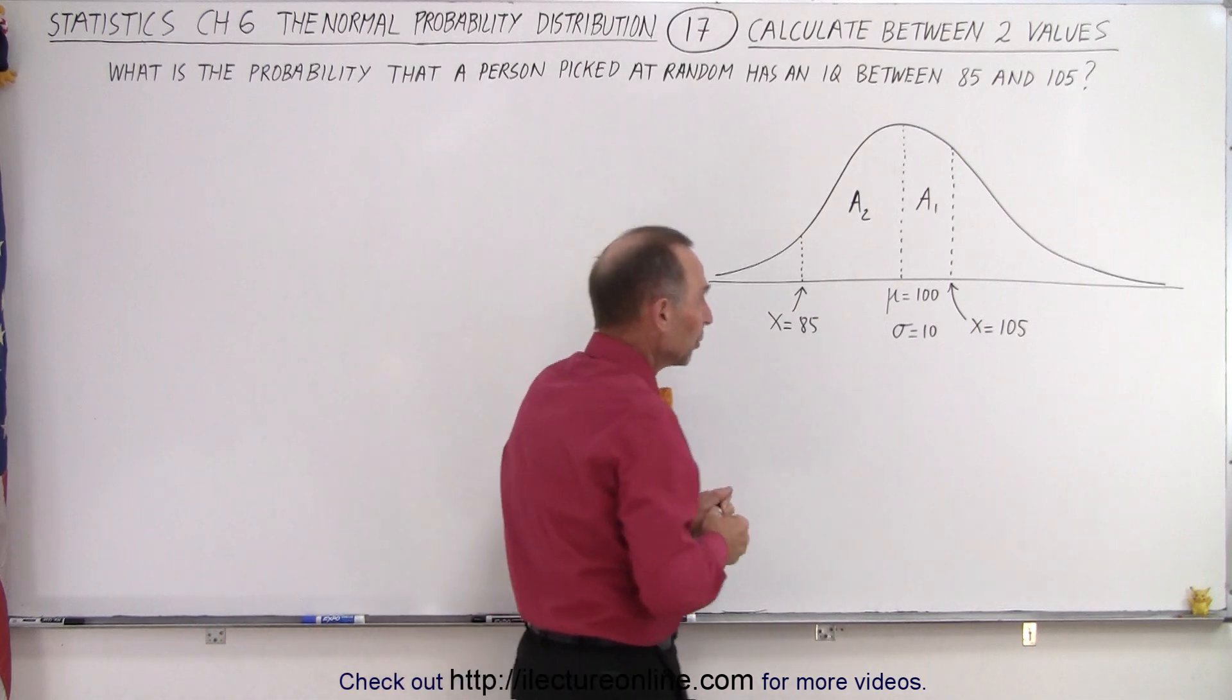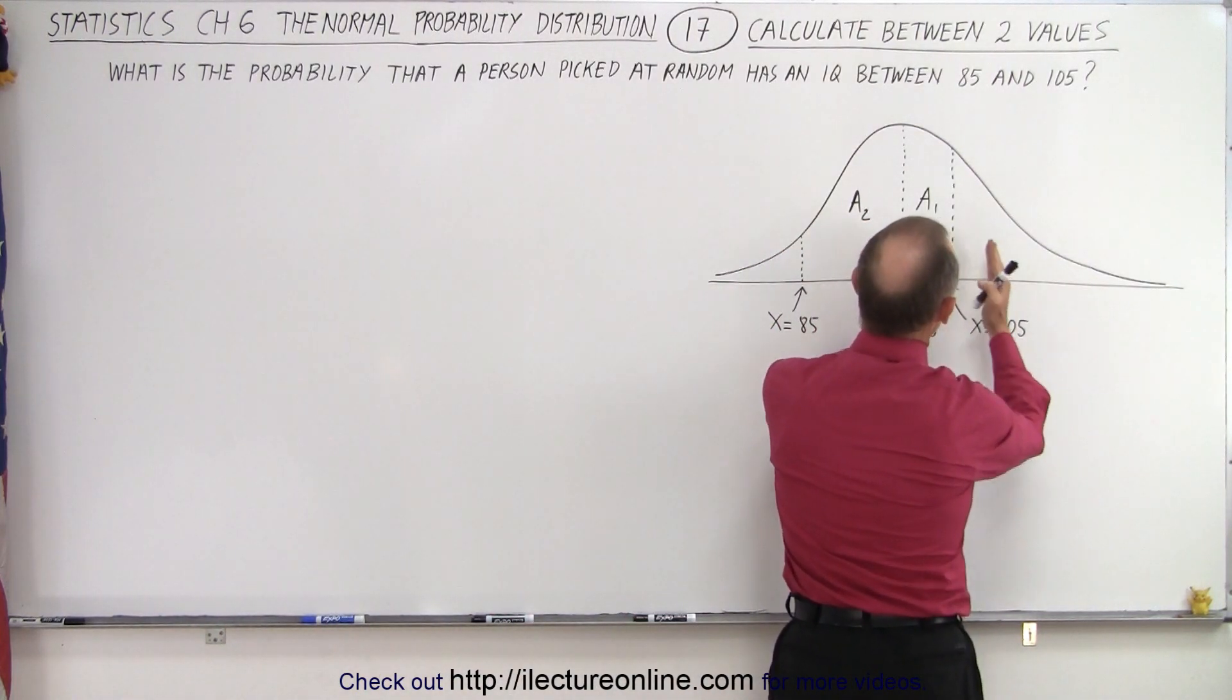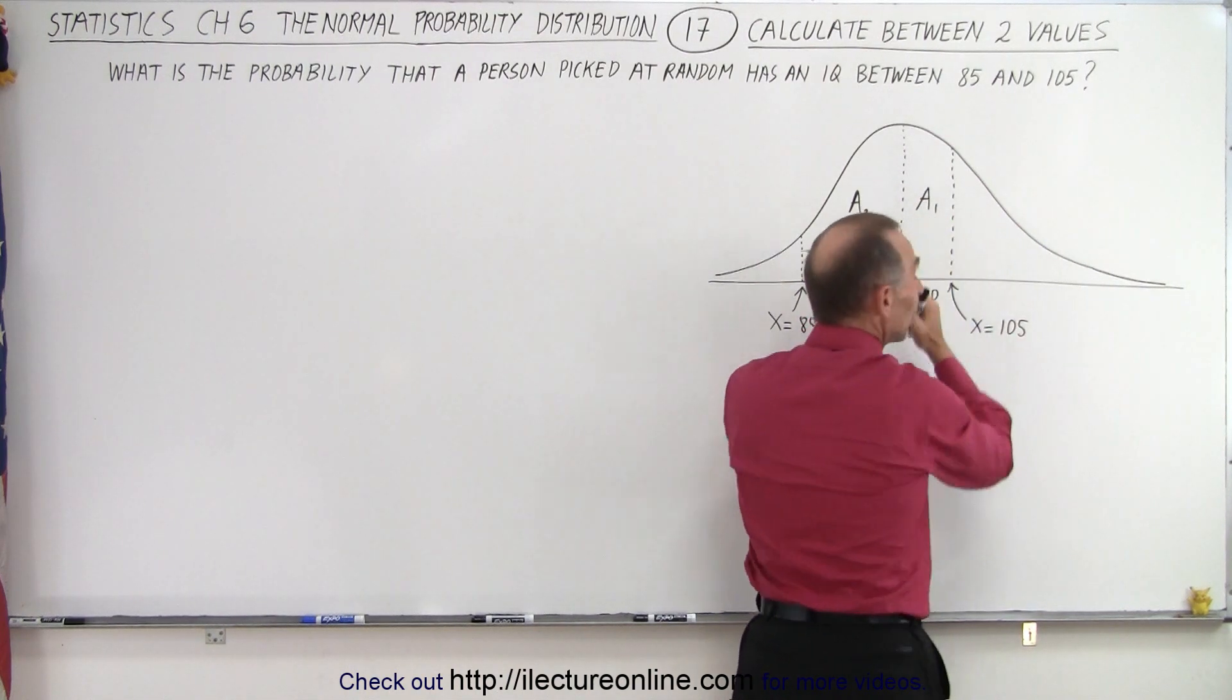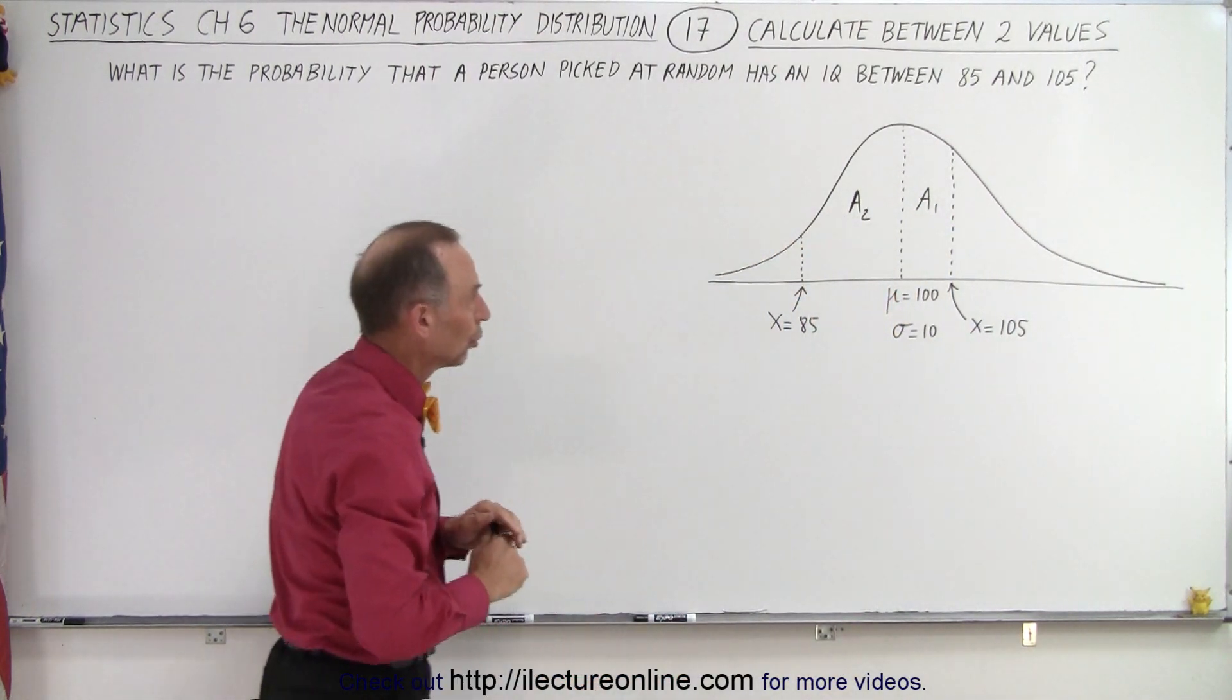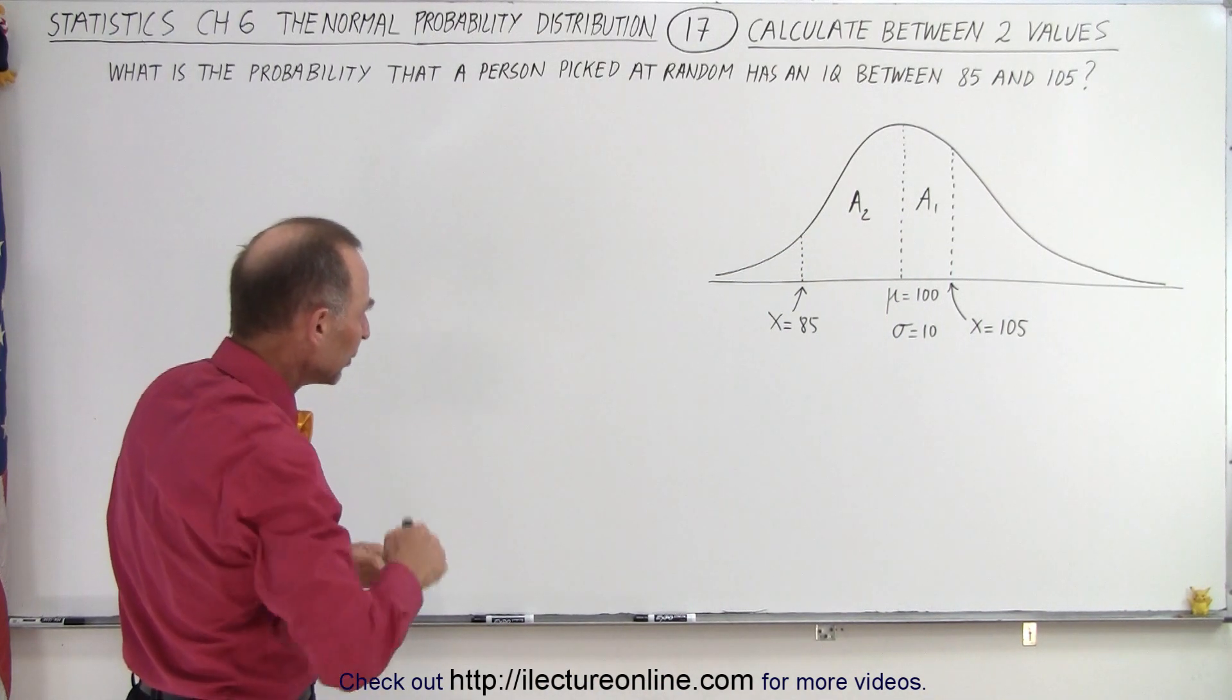If for example we want to do it between 105 and 130 or something like that, then we want to calculate this area, this area subtracted. In this case we want to add the two areas. So how do we do that?